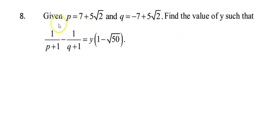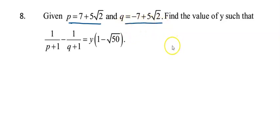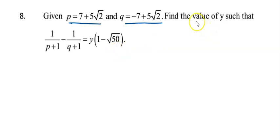Example 1: given that p equals 7 plus 5√2, and q equals 9 minus 7 plus 5√2, find the value of y such that 1 over (p plus 1) minus 1 over (q plus 1) equals y. We can see that p and q here are conjugates of each other.